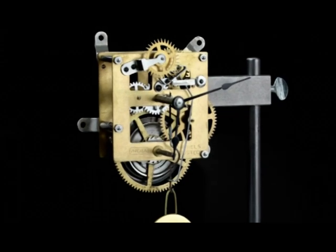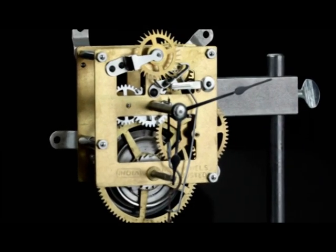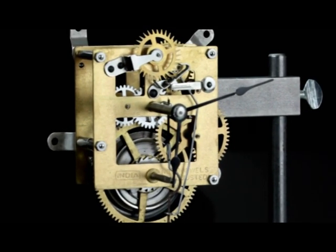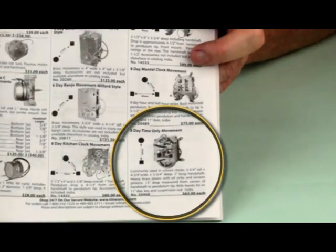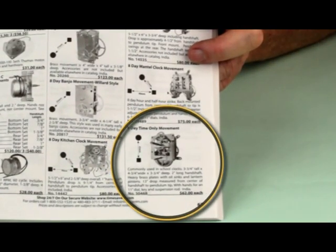For this tutorial, we will work with this 8-day time-only movement available from Time Savers. Just look for part number 30468 in the Time Savers catalog or on their website.